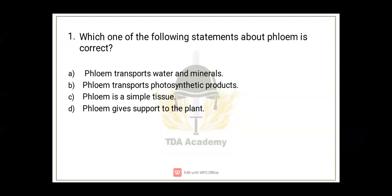The first question is: which one of the following statements about phloem is correct? Option A: phloem transports water and minerals. Option B: phloem transports photosynthetic products. Option C: phloem is a simple tissue. Option D: phloem gives support to the plant. As you know, phloem doesn't transport water and minerals—that's xylem. Phloem transports photosynthetic products, meaning the food prepared in a plant is transported through phloem.